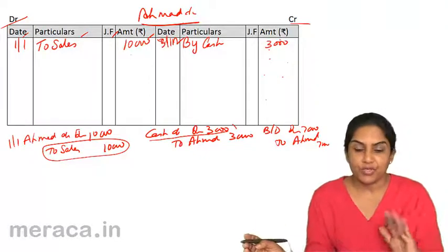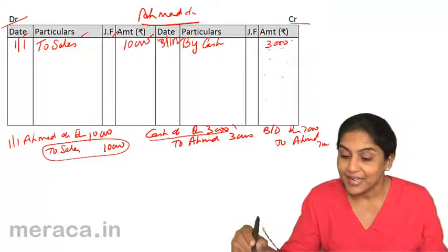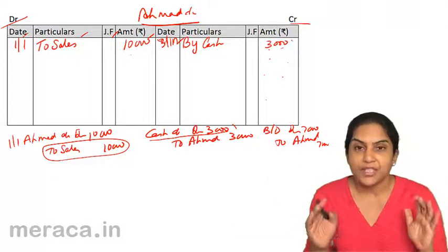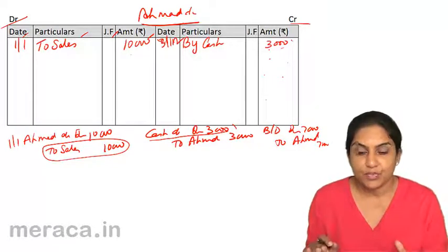Now, if I look at the two sides, I see there is a debit 10,000. There is a credit 3,000. A balance of 7,000. Which side is more? The debit side is more.